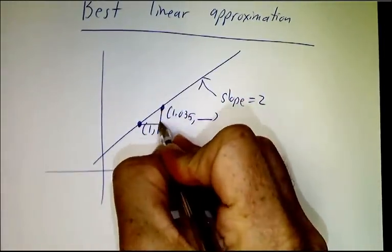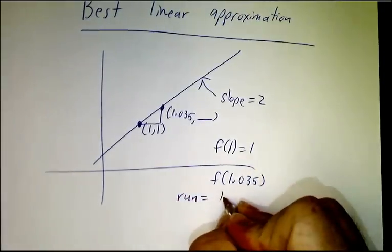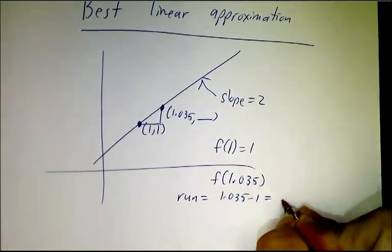And you say, okay, you've got a rise and a run. So our run is 1.035 minus 1, so that's 0.035.